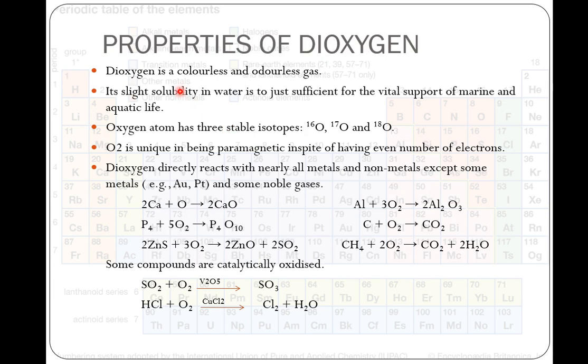Properties of dioxygen. It is a colorless, odorless gas, slightly soluble in water, but that solubility is sufficient for the vital support of marine and aquatic life. It exists in three stable isotopes: O16, O17 and O18.